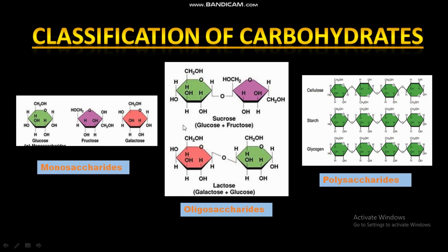Oligosaccharides contain more than one unit of saccharides, up to 10. For example, glucose and fructose are separate saccharides; when combined they form sucrose. Lactose and sucrose are examples of oligosaccharides.